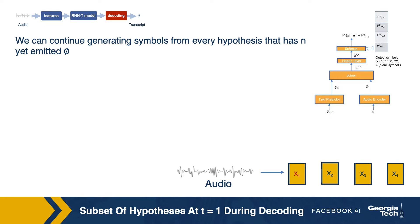Let us now look at what different hypotheses can be generated at audio frame index 1. Since we are starting to decode, our text history would be null — represented by BOS, or beginning of sentence. We pass the BOS text history to the text predictor to get a text embedding, and we pass the audio features at frame 1 to the audio encoder to get the audio embedding. We then pass both embeddings to the joiner, then to the linear layer, and finally to softmax, which gives us a probability distribution over output symbols.